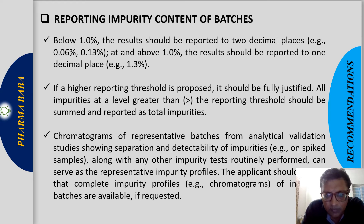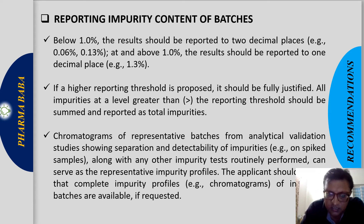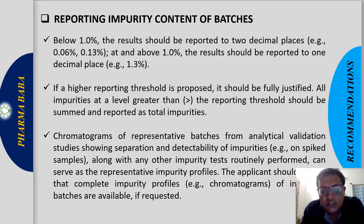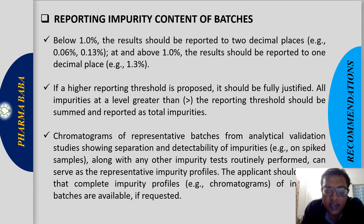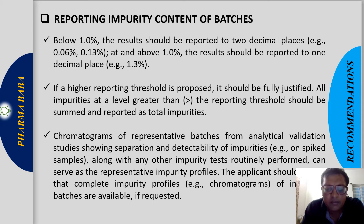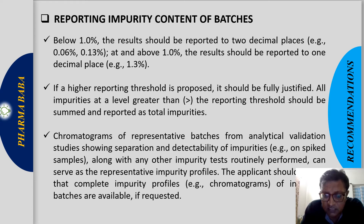All impurities at a level greater than the reporting threshold should be summed and reported as total impurities. Whatever impurities are above the reporting threshold should be reported, and total impurities will be the summation of all reported impurities for that particular batch of drug substance.